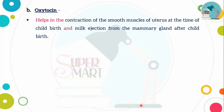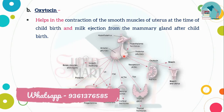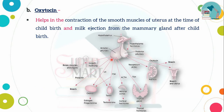The next posterior pituitary hormone is oxytocin. During childbirth, it stimulates uterine contraction. It also stimulates milk ejection from the mammary gland. To summarize: the anterior lobe secretes growth hormone, TSH, ACTH, gonadotropic hormones, and prolactin; the posterior lobe secretes vasopressin for kidney water reabsorption and oxytocin for childbirth contraction and milk ejection.